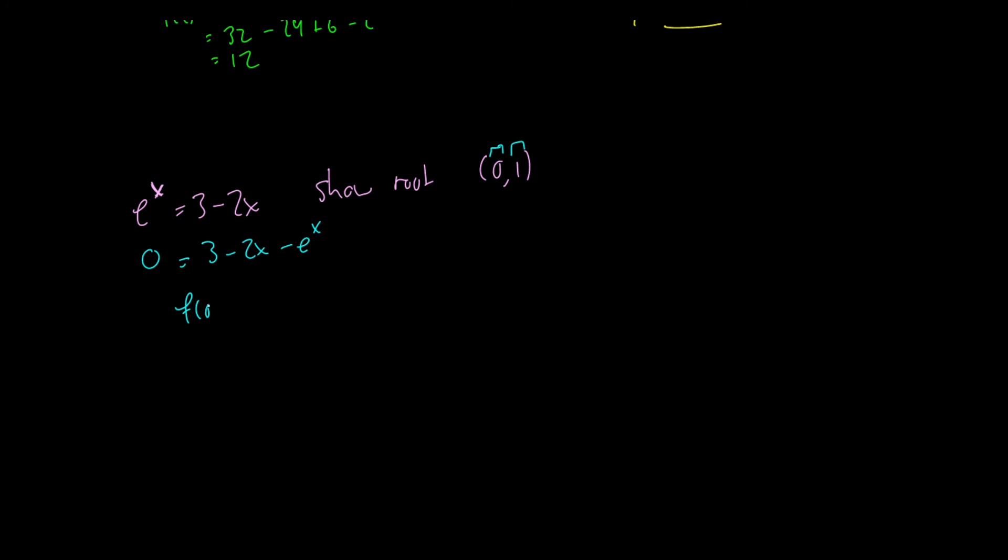So we're going to take f(0) is equal to 3 - 2(0) - e^0 which is 3 - 0 - 1 since anything to the 0 is equal to 1 which is equal to 2.